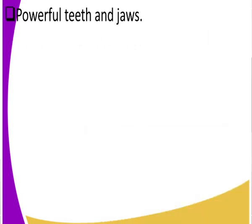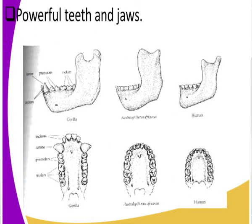Australopithecus had powerful teeth and jaws. Looking at the images, you can see six images showing the jaws and teeth — the jaw is the lower part that holds the teeth together, and you can see they were very strong. This means that its way of obtaining food had improved. Remember, early man was a hunter and a gatherer, and the improvement in jaws and teeth showed that the hunting and feeding methods had also improved.